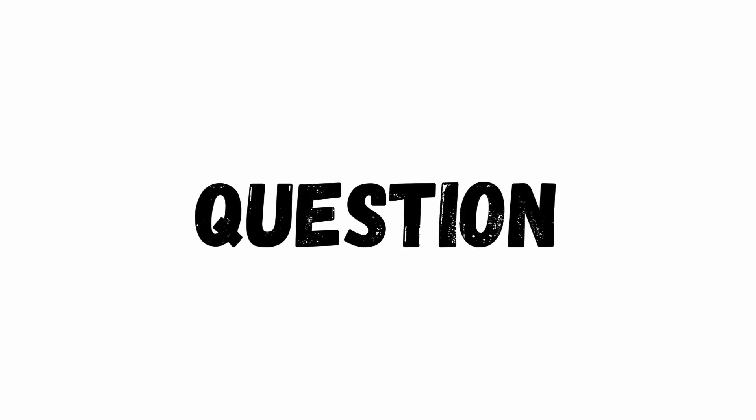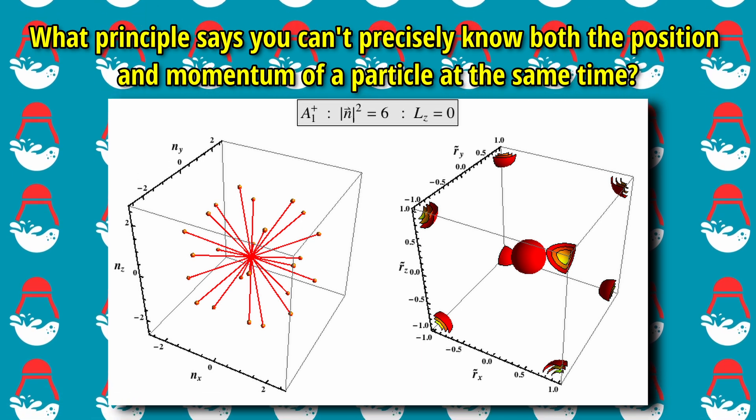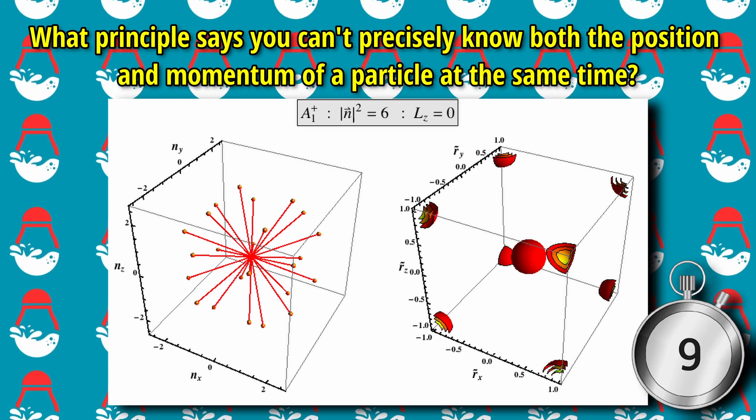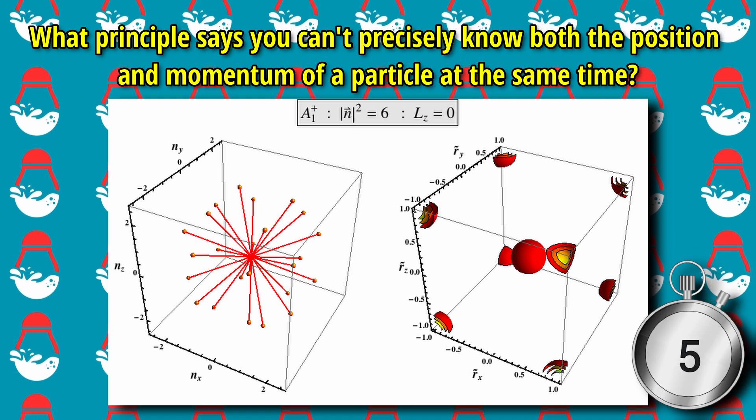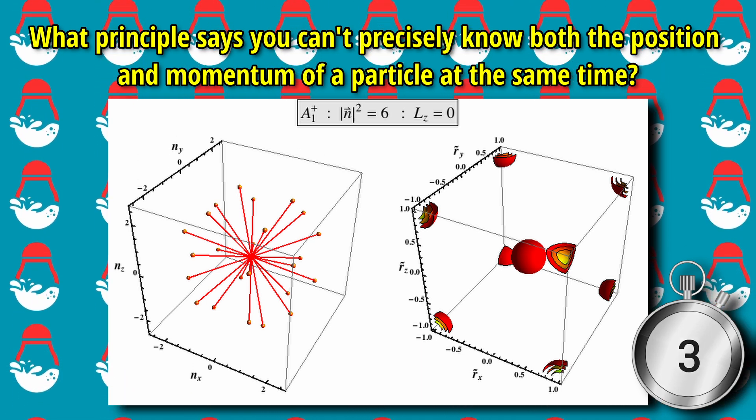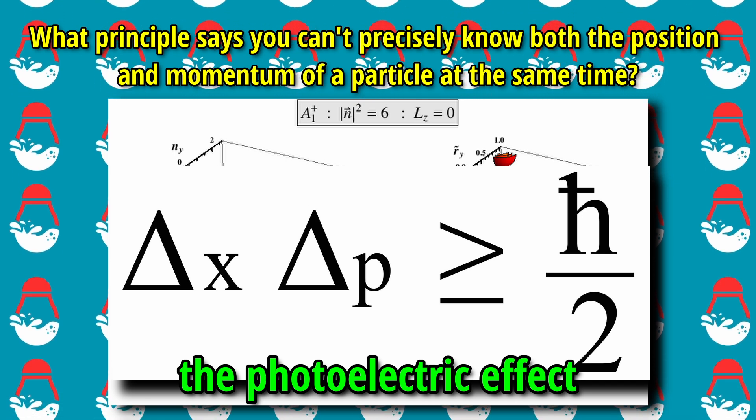Next question. What principle says you can't precisely know both the position and momentum of a particle at the same time? The answer is the Heisenberg Uncertainty Principle.